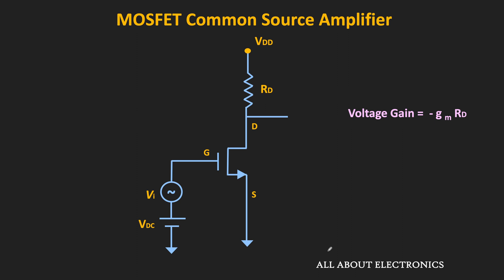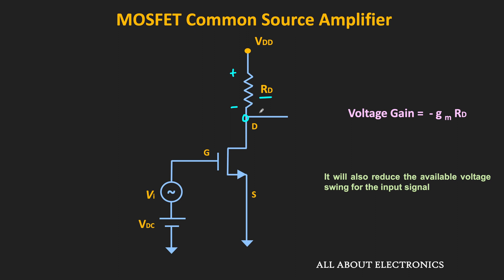Now if we want to increase this gain there are two ways: either we need to increase the value of Rd, or we need to increase the transconductance. The value of Rd cannot be increased indefinitely. Because as the value of Rd increases, the voltage drop across this resistor will also increase, and because of that the available voltage at the drain terminal will reduce. If we keep on increasing the value of Rd, at one point the MOSFET may come out of saturation. So there is a limitation on the value of Rd. When we are talking about ICs, using a large value of resistor is not a viable option — but even in discrete MOSFET circuits, Rd cannot be increased indefinitely.